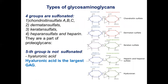Glycosaminoglycans are classified according to their structure into four groups: hyaluronan/sulfate forms, chondroitin sulfate, keratan sulfate, and heparan sulfate and heparin — and they are part of proteoglycans. A fifth group is not sulfonated and is represented by hyaluronic acid.